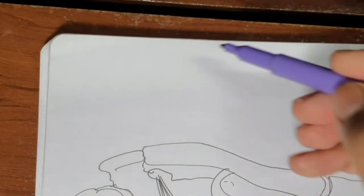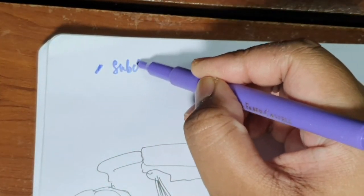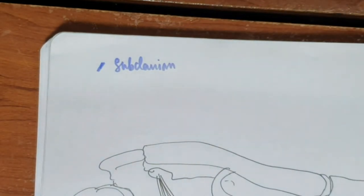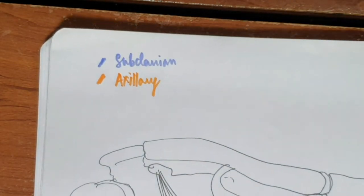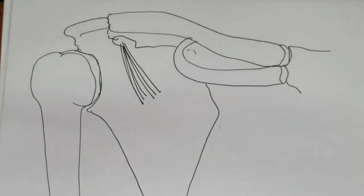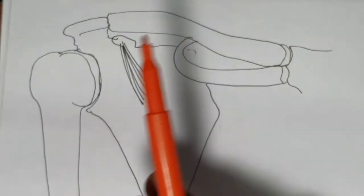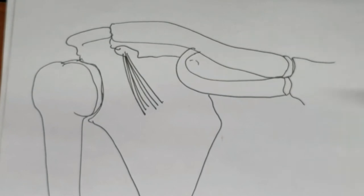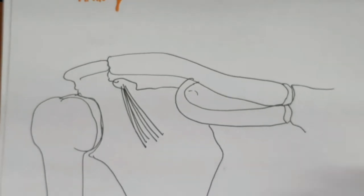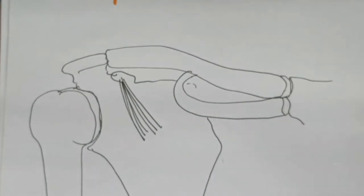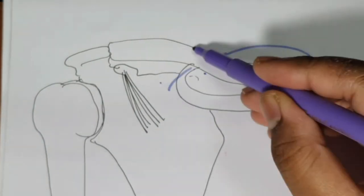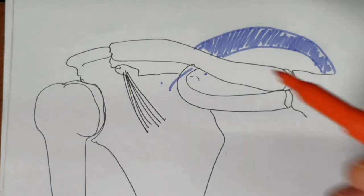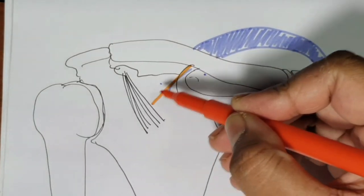I'm going to use purple for the subclavian and orange for the axillary artery. Here we have the clavicle, the first rib, the sternum, the scapula, and the humerus. Please don't look for accuracy in this diagram — it is a rough diagram just to show how the vessels travel and how the anastomosis is formed. First we have the subclavian artery, and after the lateral border of the first rib it becomes the axillary artery.